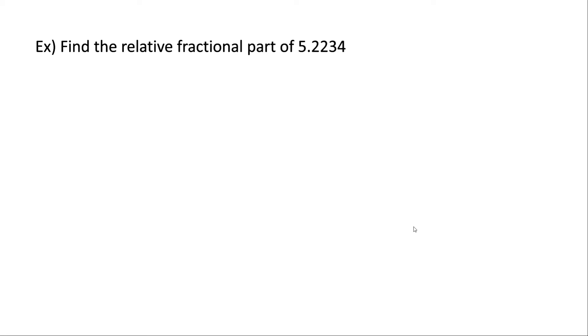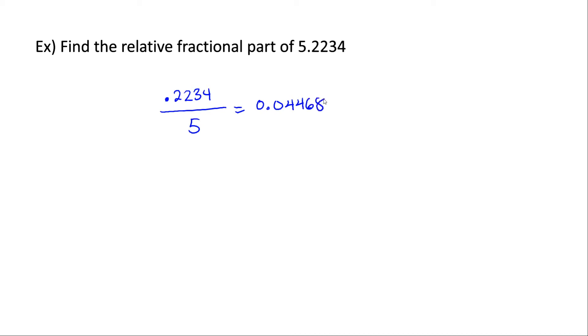Now let's look at another example. Find the relative fractional part of 5.2234. Pause the video here, try to find it yourself, then hit play to see if you did it correctly. So the relative fractional part here: we take the decimal part of the number, 0.2234 — remember to include the decimal, as one mistake people often make is they forget to include it — and divide that by 5, and we get 0.04468.